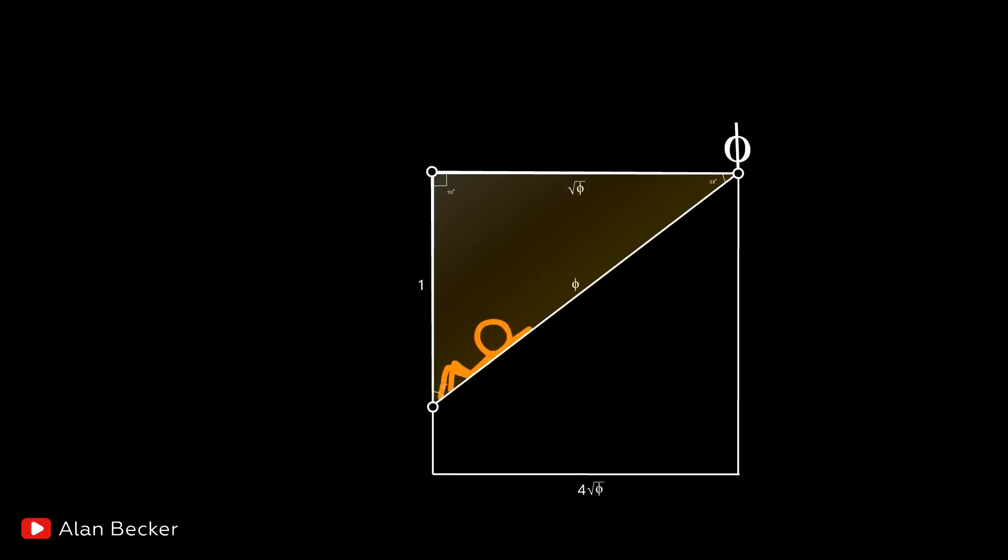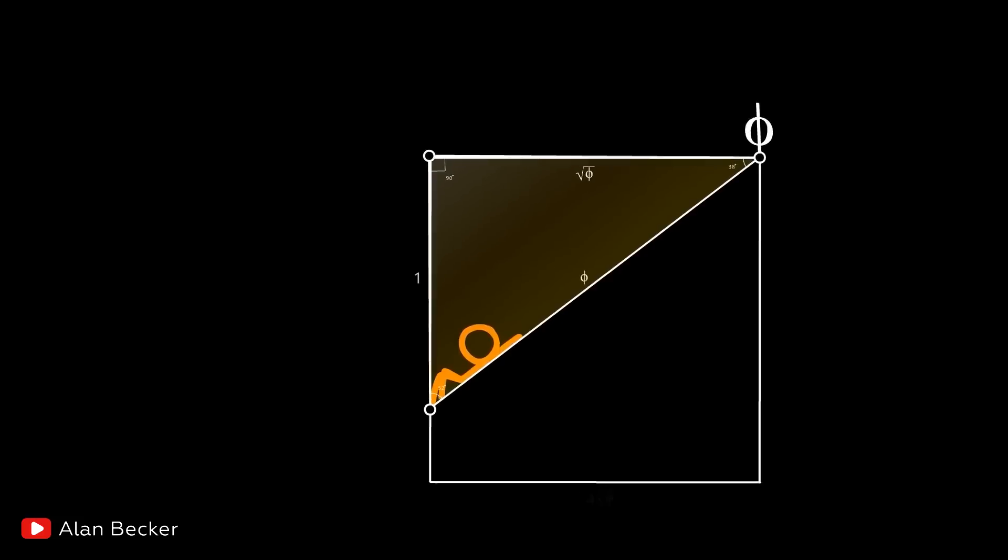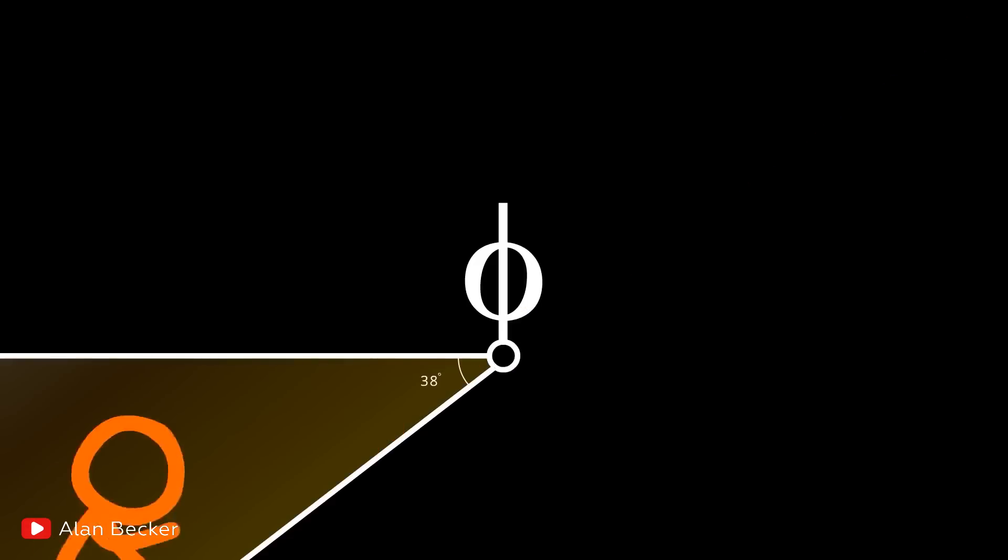Once again, it's appropriate to click on pause. If the legs of the right triangle are 1 and the root of phi, then hypotenuse will be exactly equal to phi. A beautiful property of the golden ratio. Moreover, for such proportions, the angles of the triangle will be approximately 38 degrees, 52, and 90.